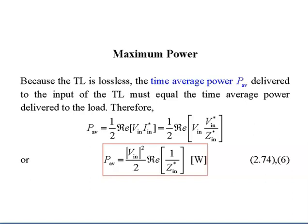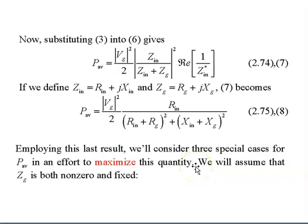Next, we consider maximum power. Because the transmission line is lossless, the time-average power P_average delivered to the input of the transmission line should equal the time-average power delivered to the load. We are going to consider three special cases to maximize P_average, assuming that Z_g is both non-zero and fixed.